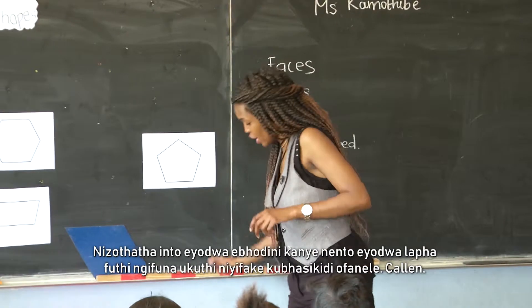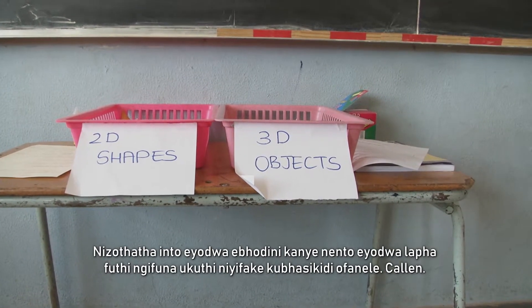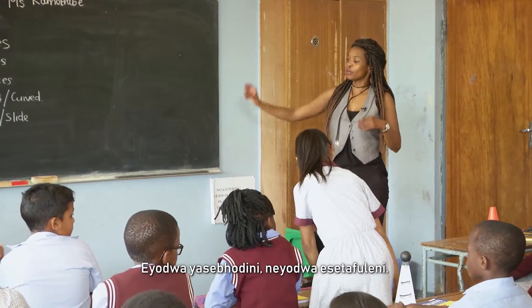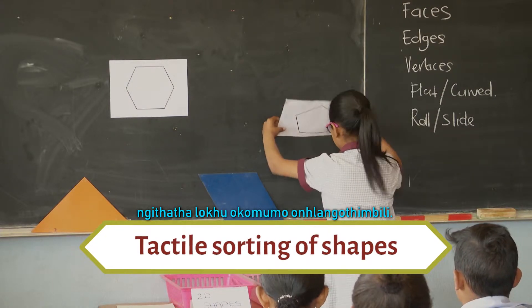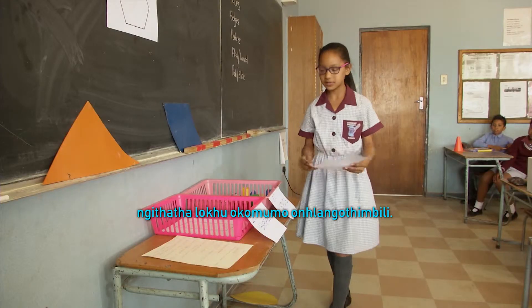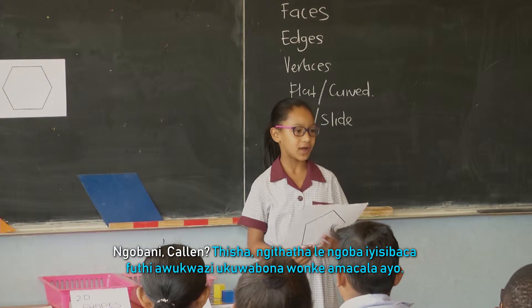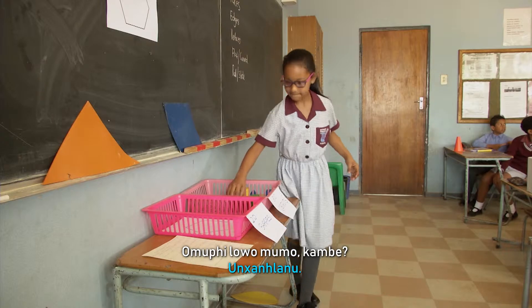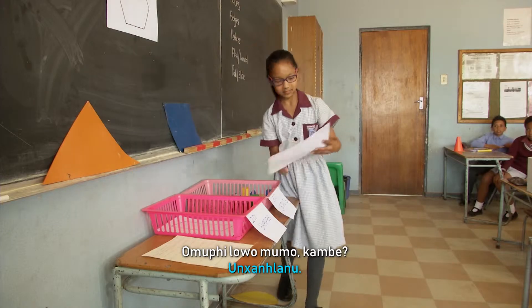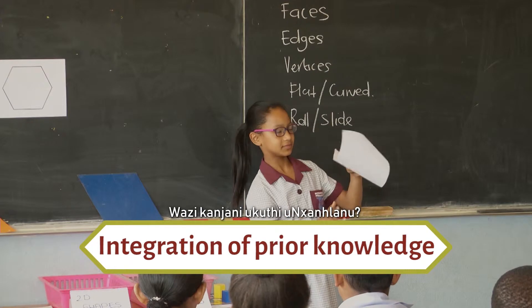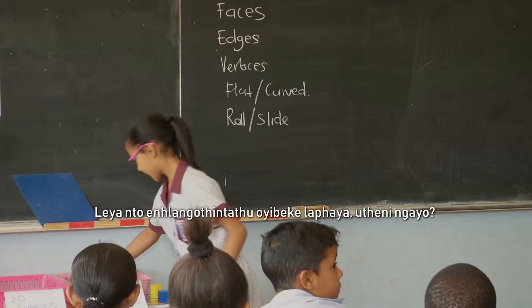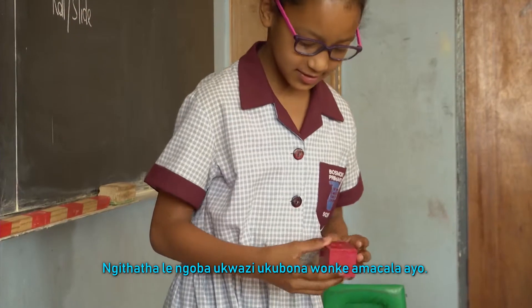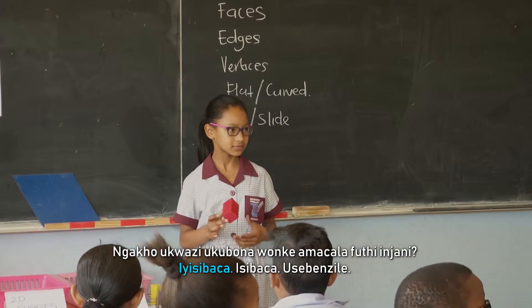You are going to take one thing from the board and one thing from here, and I want you to put it in the correct basket. Callan, one from the board and one from the table. I'm taking this one for the 3D objects and this one for the 2D shapes. Why, Callan? I'm taking this one because it's flat and you can't see all the sides. And what shape is that? How do you know it's a pentagon? Because it's flat. Well done. And the 3D object you placed there — you can see all the sides, and it's fat. Well done.